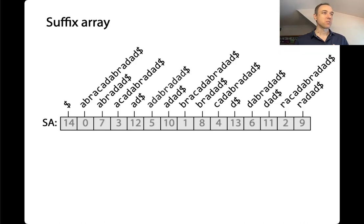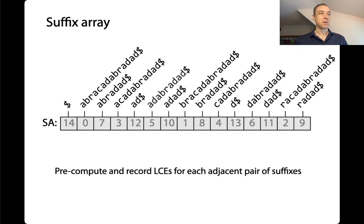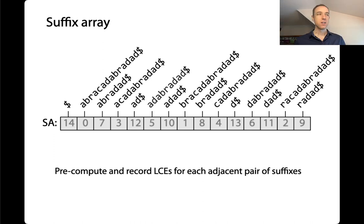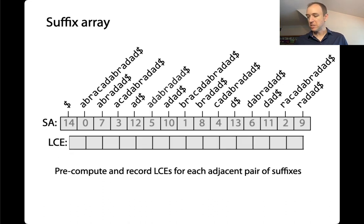Back to our example suffix array, which we've been working with for the last few videos. The first thing we're going to do — we already saw what LCEs are, longest common extensions — these are essentially the longest common prefix between two different suffixes. We're going to pre-compute a bunch of these LCEs, specifically the LCEs between adjacent elements of the suffix array. So between every adjacent pair of elements, we'll pre-compute and record those LCEs.